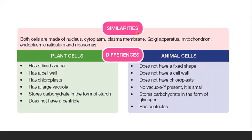Here is the table I drew. The similarities between animal cells and plant cells: both are made of the nucleus, cytoplasm, plasma membrane, Golgi apparatus, mitochondria, both rough and smooth endoplasmic reticulum, and also ribosomes. All these cell components can be found in both plant cells and animal cells — that's why we call them similarities.